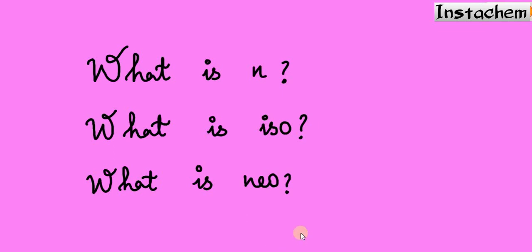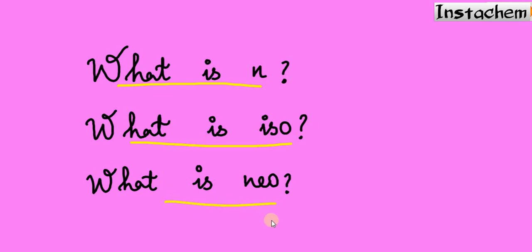Hello students, today we are going to discuss a very important topic in organic chemistry: what is 'n', what is 'iso', and what is 'neo'. These three topics we are going to discuss today. In organic chemistry, we come across terms like normal, iso, neo — for example, neopentyl alcohol, isopropyl alcohol, isobutyl alcohol — in hydrocarbons and their derivatives.